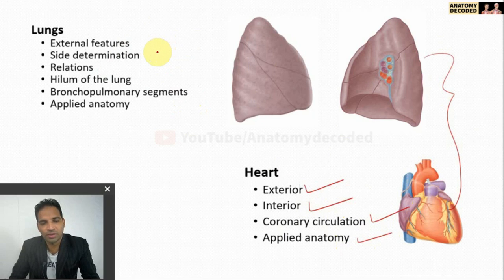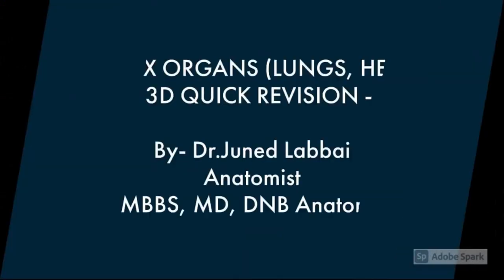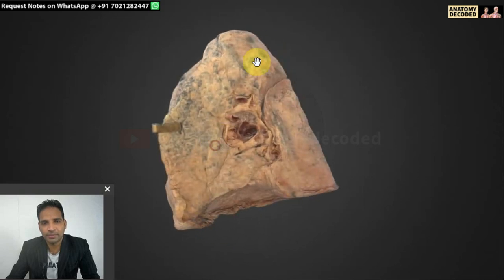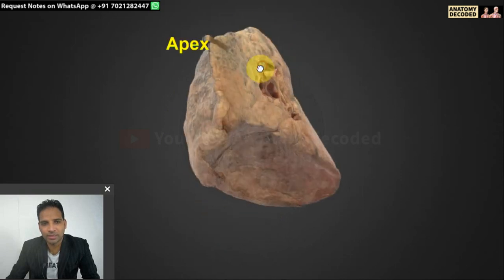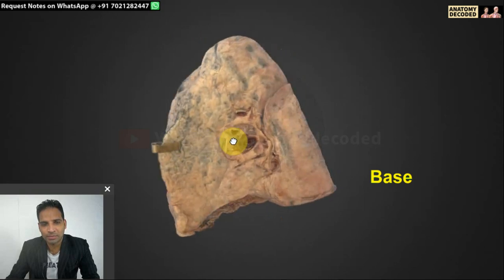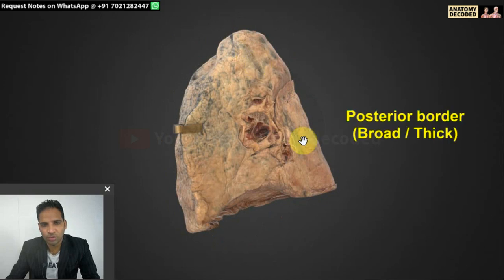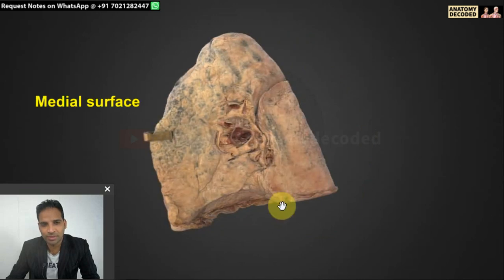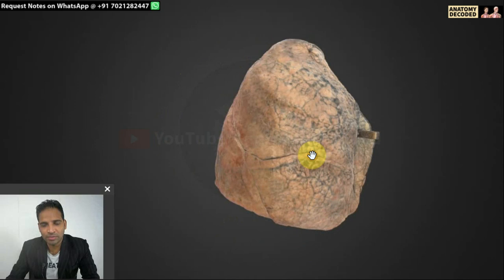Let us begin with the external features of the lung using the 3D model. Here we can see the specimen of the right lung. The upper part is the apex of the lung. The lower broad part is the base of the lung. It has a sharp anterior border, a broad posterior border, and two surfaces: the costal surface and the medial surface. The medial surface is further subdivided into a mediastinal surface and a vertebral surface.